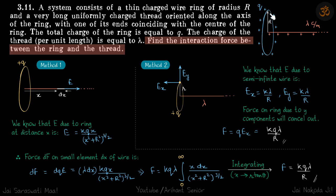We are given a positively charged ring of charge Q and a semi-infinite wire which has a linear charge density λ coulombs per meter. We need to find the force between the ring and the thread.